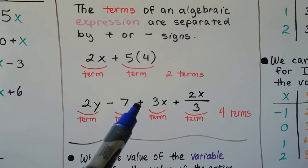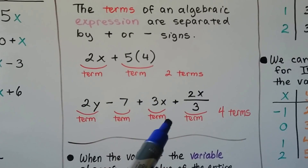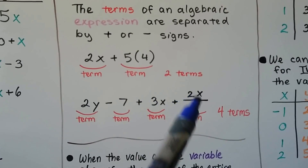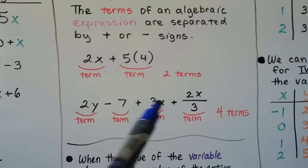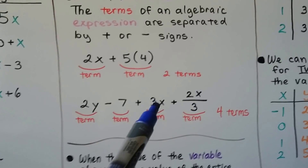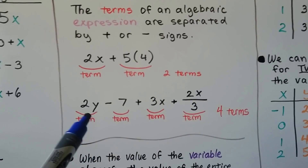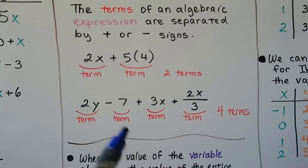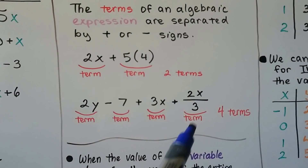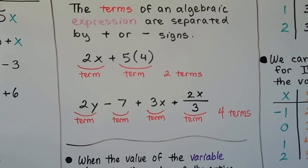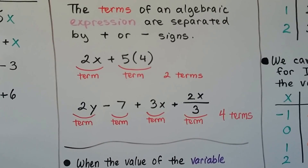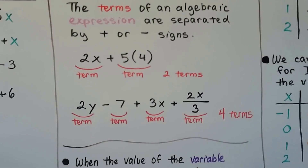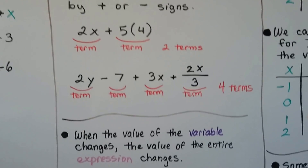We have a minus sign, a plus sign, and a plus sign. Even though part of the expression means division and 3x means multiplication, we count one term, two terms, three terms, four terms — they are only separated by a plus or a minus sign.